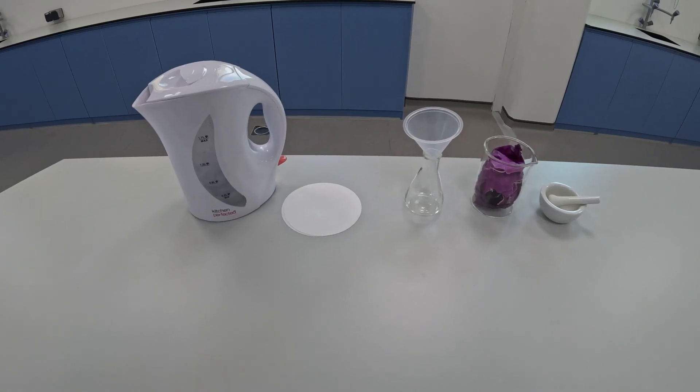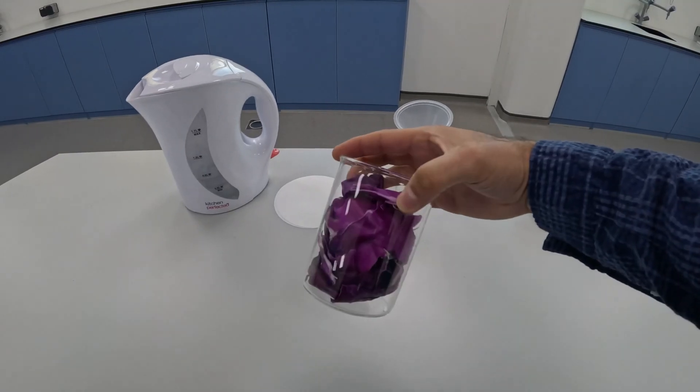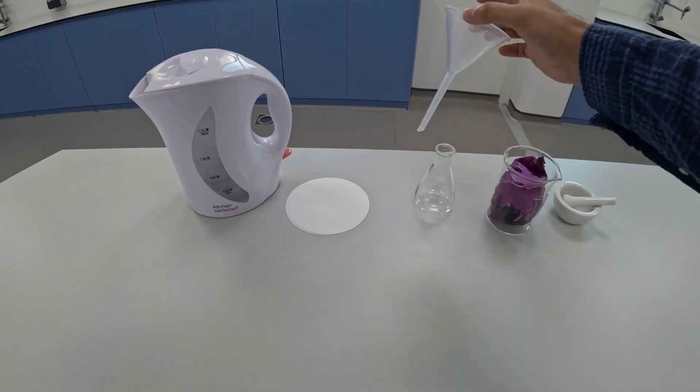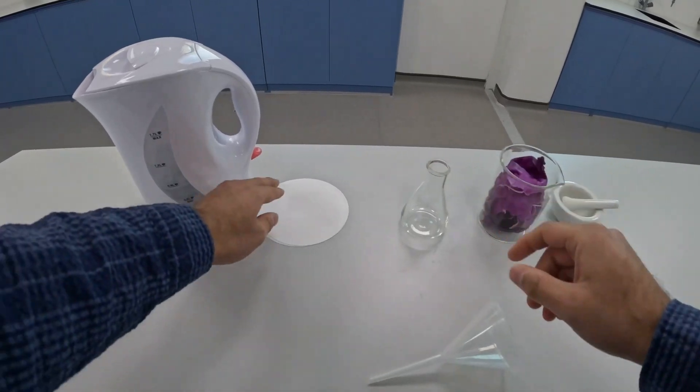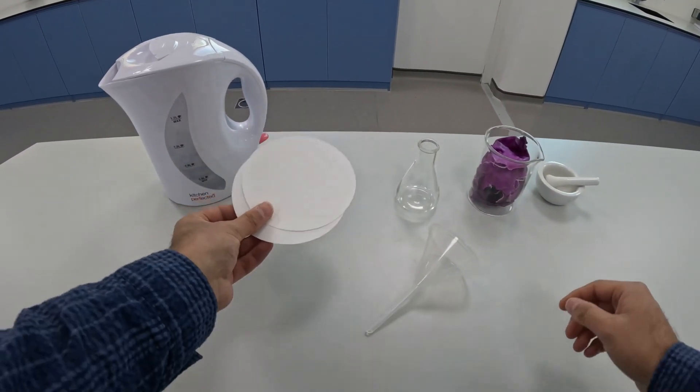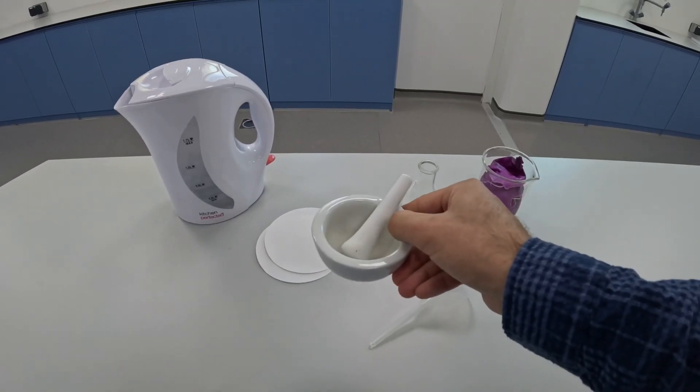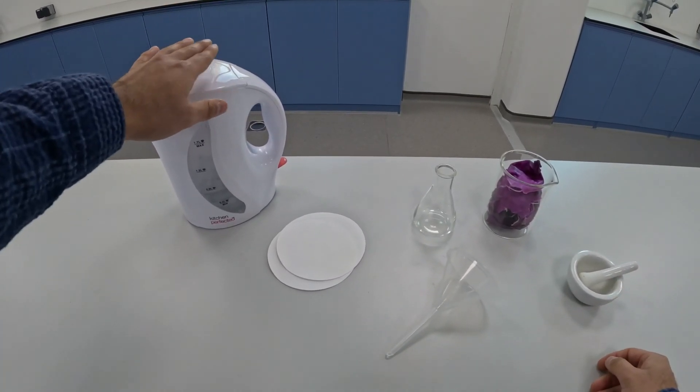To make red cabbage indicator you're going to need some red cabbage, a filter funnel, a conical flask, some filter paper, a pestle and mortar, and some hot water.